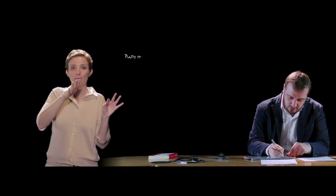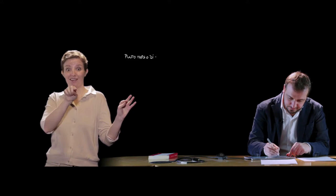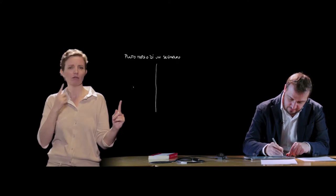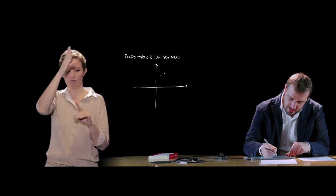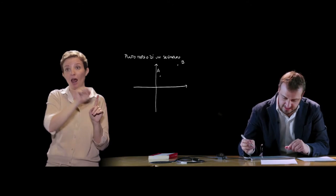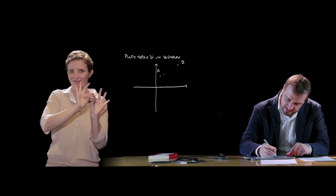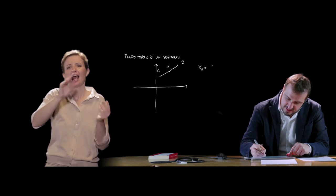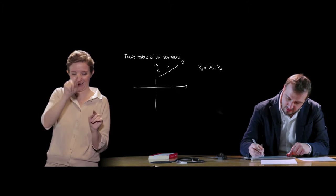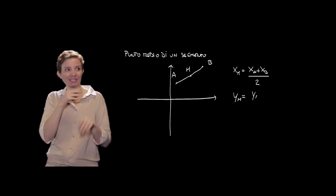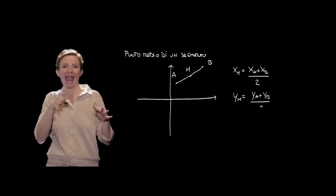Un'altra formula molto importante è quella che riguarda il punto medio di un segmento. Dato un segmento di estremi A di coordinate xA, yA e B di coordinate xB, yB, le coordinate del punto medio M saranno: xM uguale alla media delle ascisse dei due estremi, cioè (xA + xB) / 2, e yM uguale alla media delle ordinate dei due punti, cioè (yA + yB) / 2.